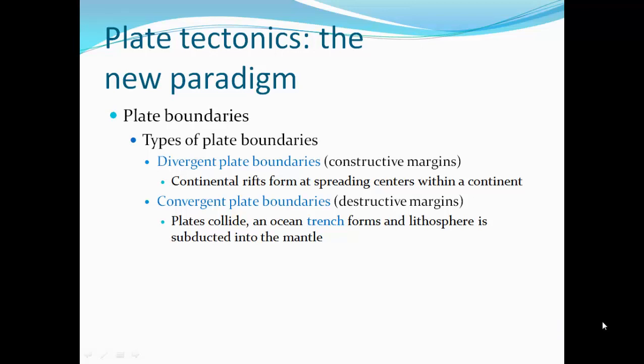Continental rifts form at spreading centers within continents, so we may also have divergent plate boundaries in the middle of a continent. Convergent plate boundaries are destructive margins where plates are pushed together. They collide, and an ocean trench forms as the ocean crust subducts — slides underneath — the continental crust, and the lithosphere is subducted down into the mantle.